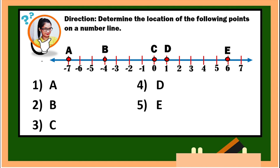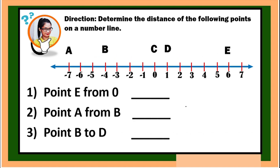Let us start locating them. For number one, point A is on negative seven. Point B is on negative four. Point C is on zero. Point D is on one — since it's positive, we can simply write it as one. And for number five, point E is on positive six.